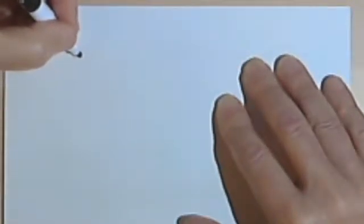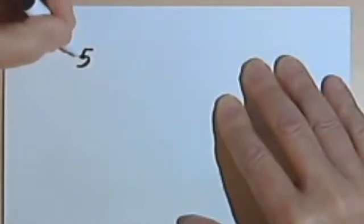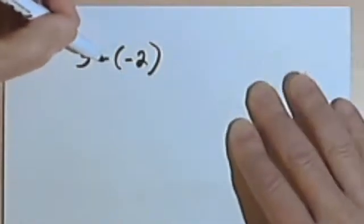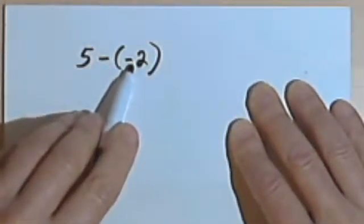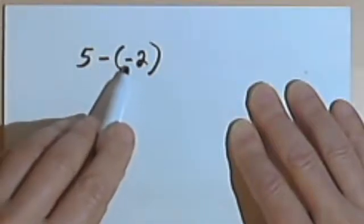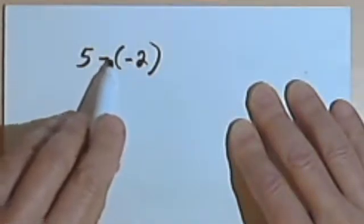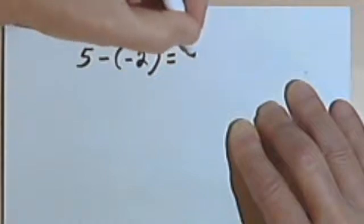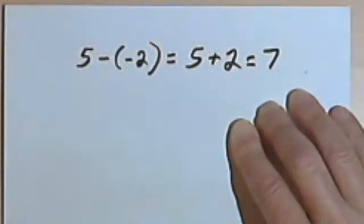Now let's go on to addition and subtraction. Let's get subtraction out of the way quickly. If you have 5 minus negative 2, you have a subtraction followed by a negative. You can combine both of those minus signs into one positive sign. So 5 minus negative 2 is the same as 5 plus 2, which of course equals 7.